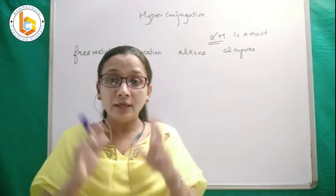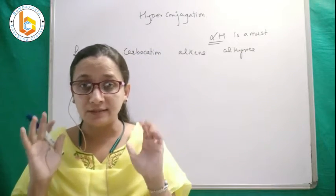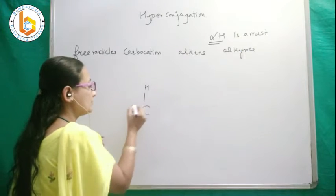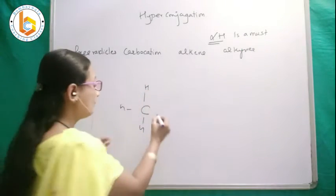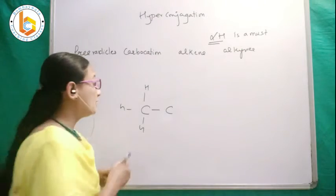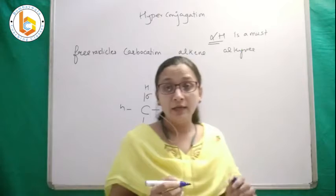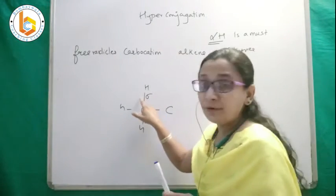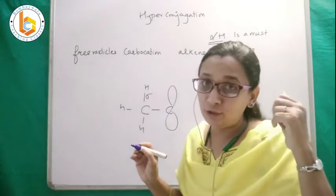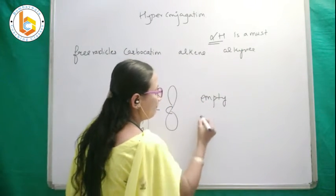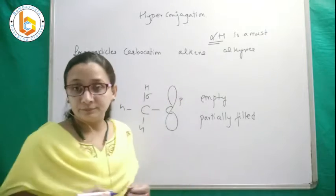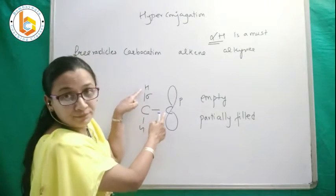Now, what is hyperconjugation? You have to be very clear in understanding this concept. It is the interaction between the sigma electrons — coming from a sigma bond, which is a single bond — and an empty or partially filled p orbital. Note carefully: there are two words here — empty or partially filled p orbital. These two entities are lying adjacent (alpha) to each other.